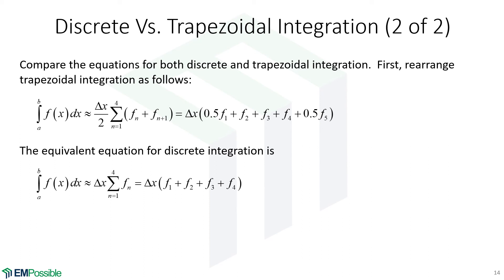Discrete integration. Again, we're using our four points. We have a delta X and just a sum of function values. Let's compare these two.